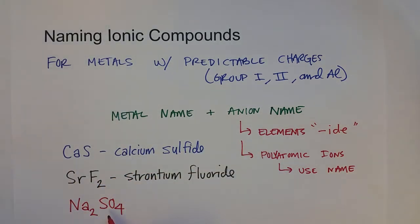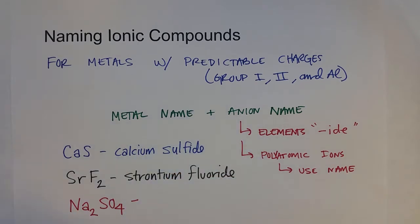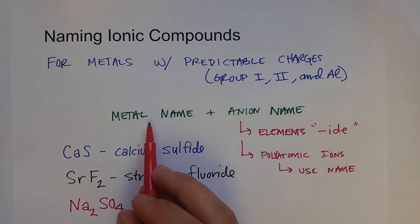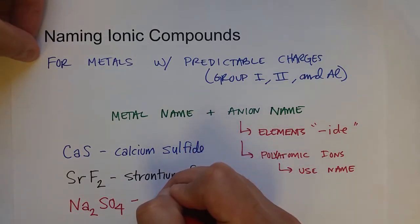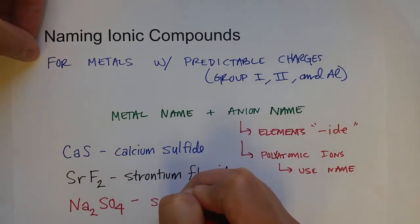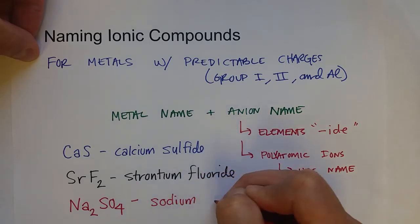Sulfate is a minus two anion, so that's going to take two sodiums. We just learned how to create formulas for those compounds, but naming it is straightforward: the metal name and then the polyatomic ion's name — so this would be sodium sulfate.